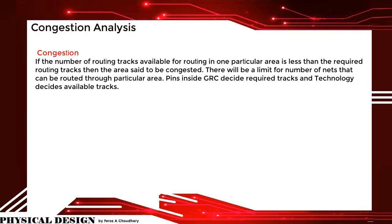If the number of routing tracks available for routing in one particular area is less than the required routing tracks, then the area is said to be congested. There will be a limit for the number of nets that can be routed through a particular area. Pins inside a GRC decide the required tracks, and technology decides the available tracks.